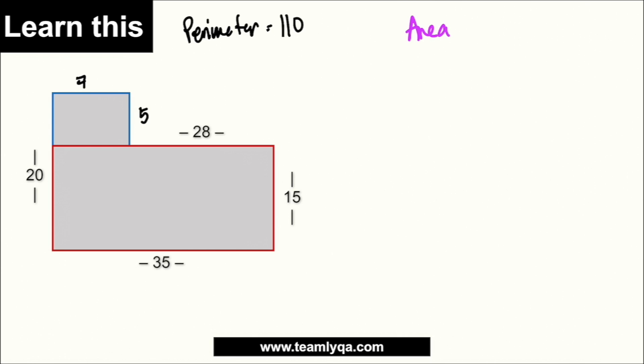Kasi nga, hindi regular yung shape. So, all I have to do now is to find kung anong area nung unang shape. At dahil siya ay rectangle, ang formula niya ay length times width. Which is going to give me 7 times 5 or 35. Ito yung una.